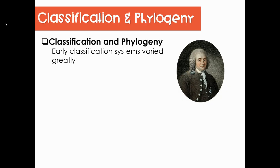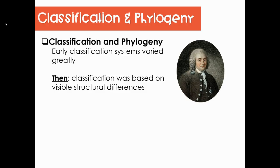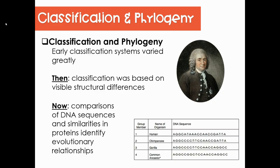We've been classifying organisms for many, many years, and the early classification systems varied greatly. Back in the day, classification was based on visible structural differences — for example, if two organisms had wings, earlier classifications would say they must be related or share a common ancestor because they have similar structures. We've changed a bit. Now we use DNA sequences, protein sequences, and amino acid sequences to help identify evolutionary relationships.